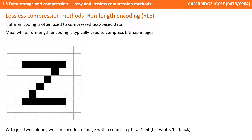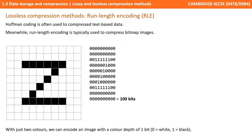Here we're going to show a simple bitmap image consisting of only two colours: white and black. We can store white pixels as a 0 and black pixels as a 1. Writing that out in the same order as the pixels from the bitmap, you can see a sequence of 100 0s and 1s — so that's 100 bits of information to store. You'll notice there are lots of contiguous sections of white pixels and black pixels. For example, 22 white pixels followed by 6 black pixels, followed by 8 white pixels, followed by 1 black pixel, and so on.